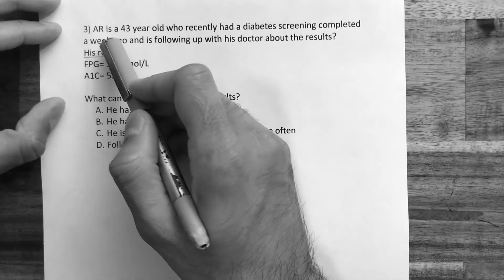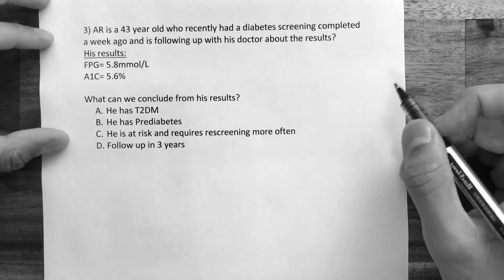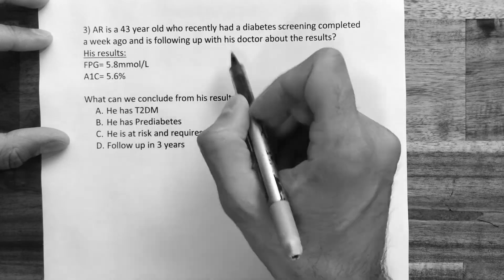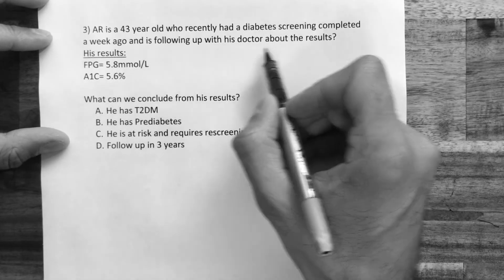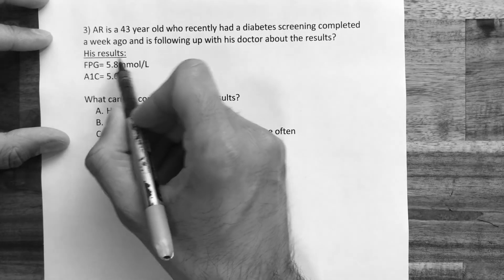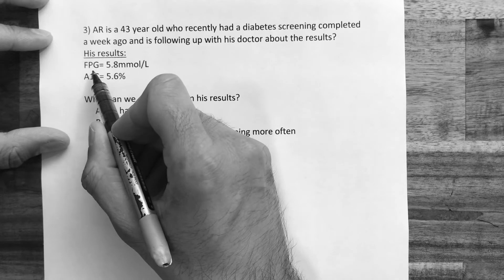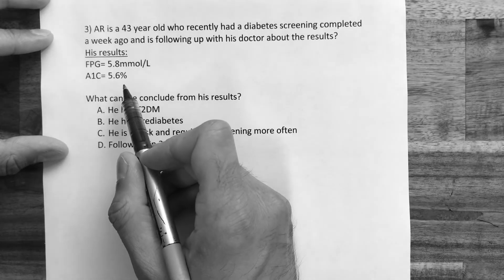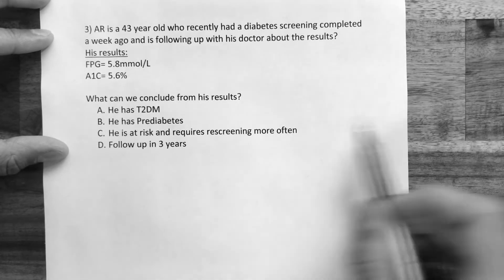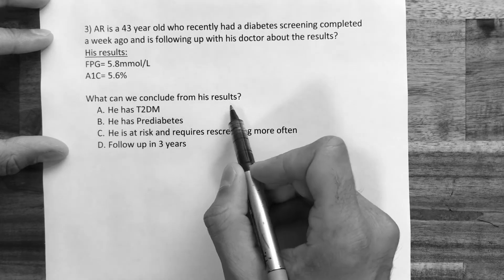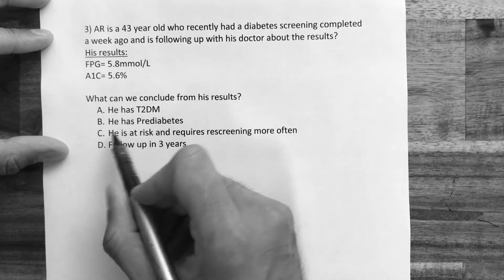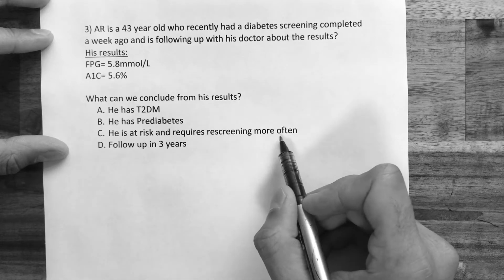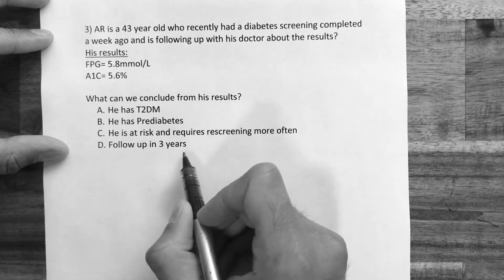Patient AR is a 43-year-old who recently had a diabetes screening completed a week ago and is following up with his doctor. His results are: fasting plasma glucose 5.8 millimoles per liter and A1c 5.6%. What can we conclude? The options are: he has type 2 diabetes; he has pre-diabetes; he's at risk and requires re-screening more often; or follow up in 3 years.